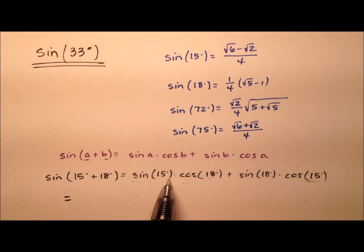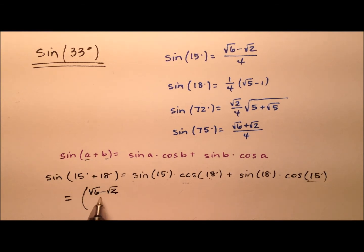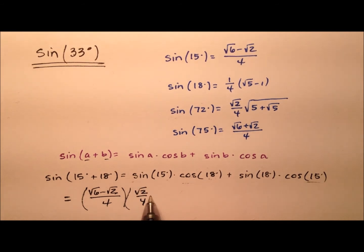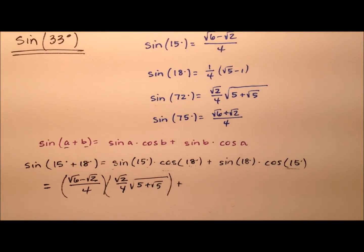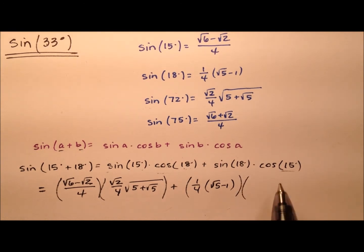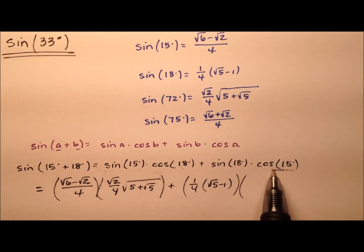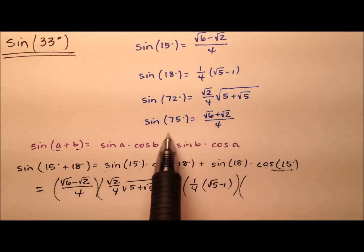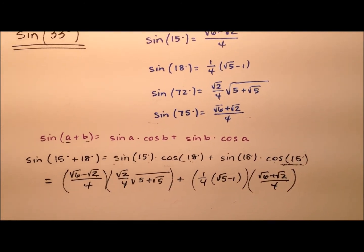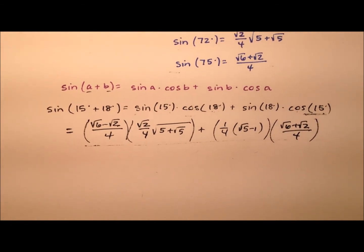So we have the sine of 15 degrees, which is the square root of 6 minus the square root of 2 all over 4, and the cosine of 18 degrees — equivalent to the sine of 72 degrees — which is the square root of 2 over 4 times the square root of the quantity 5 plus radical 5. Then the sine of 18 degrees is 1 fourth of the square root of 5 minus 1, times the cosine of 15 degrees, which equals the sine of 75 degrees: the square root of 6 plus the square root of 2 all over 4.